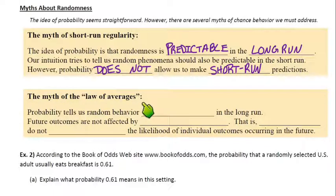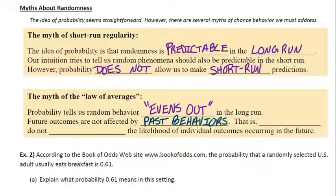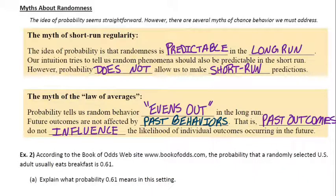And the next myth here. The myth about the law of averages. Probability tells us random behavior sort of evens out in the long run, sort of averages out. Future outcomes are not affected by past behaviors, and that's kind of the point here. Future outcomes are not affected by past behaviors. That's to say that past outcomes do not influence the likelihood of individual outcomes occurring in the future.